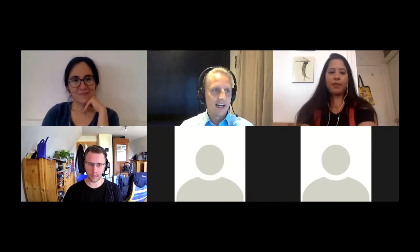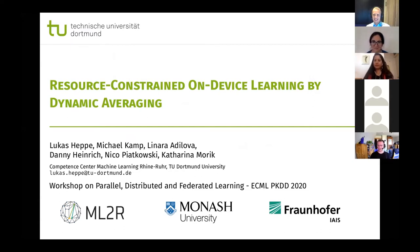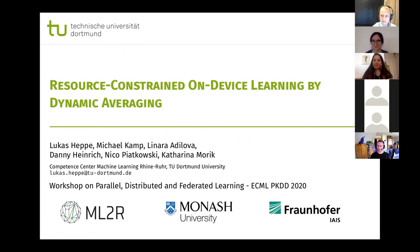Our next contributed presentation is from Lukas Heppel on his paper 'Resource Constraint On-Device Learning by Dynamic Averaging.' This is a joint work from the Amateur Research Center in Germany, Dortmund and Bonn, alongside Monash University and Bonhoeffer EIS.